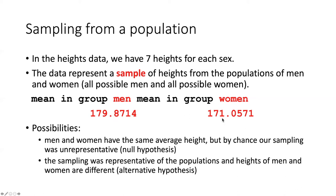But if we had measured all men and all women, they would turn out to be the same height. The other possibility is that the sampling was representative of the overall populations, and that the heights of men and women are really different. And that's why we got two different values for our samples. So the question is, how do we decide between these two possibilities?